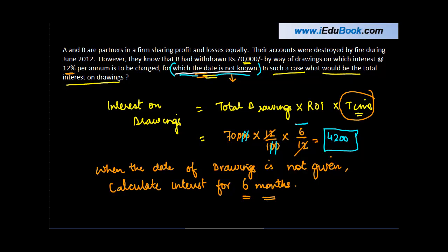So, basically, then you computed interest for the average period, which is 6 by 12.